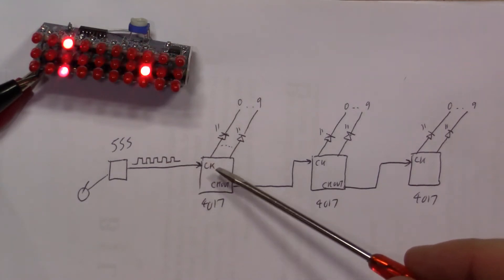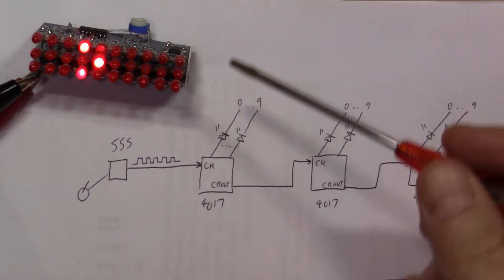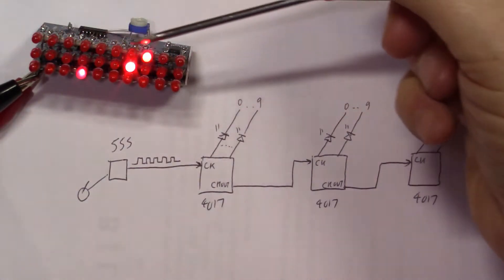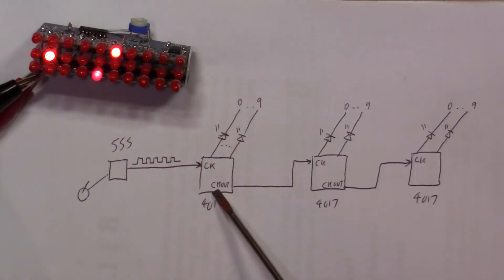So the 555 clocks the first 4017 and that's got the 10 LEDs here, those are the 0-9 LEDs along that top row there. And we also have this pin clock out and the clock out changes whenever the 10th LED has been lit, so this is like a divide by 10.